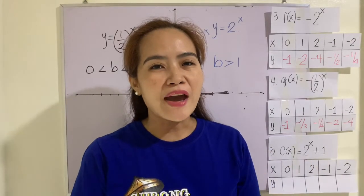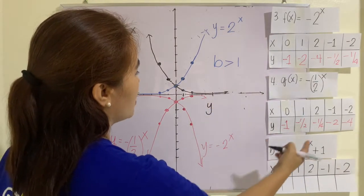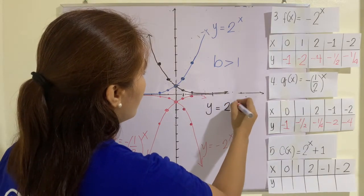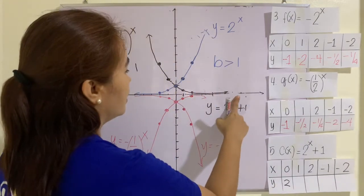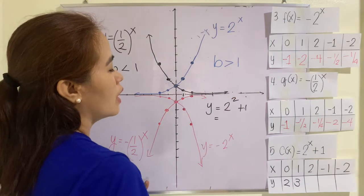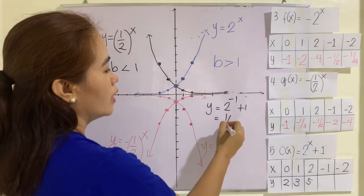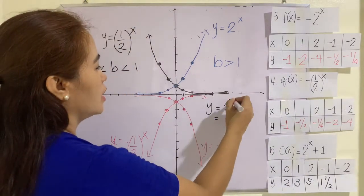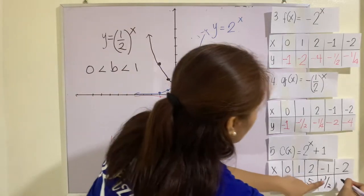Example number 5: suppose we have the function f of x equals 2 raised to x plus 1. Replacing x by 0 gives 1 plus 1, which is 2. Replace x by 1: that's 2 plus 1, which is 3. Replace x by 2: that's 4 plus 1, which is 5. Replace x by negative 1: 1/2 plus 1, which is 1 and 1/2. Replace x by negative 2: 1/4 plus 1, which is 1 and 1/4.